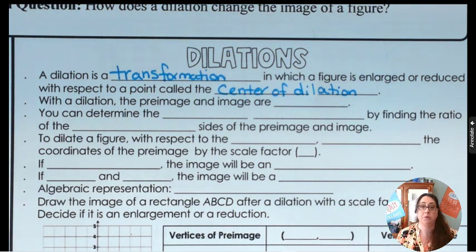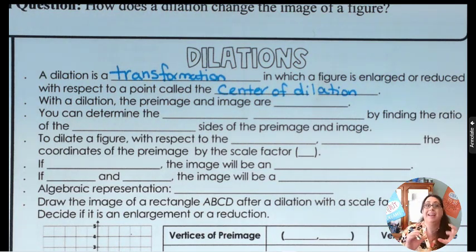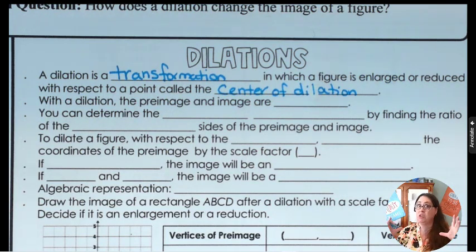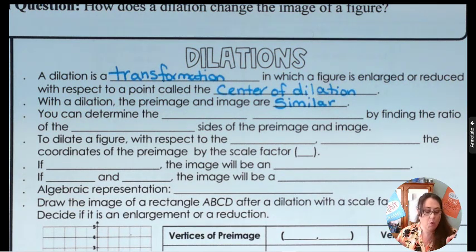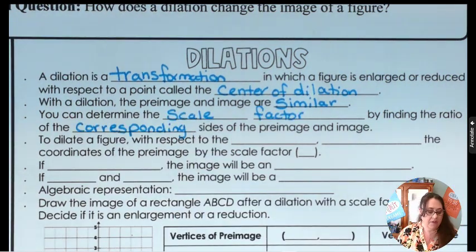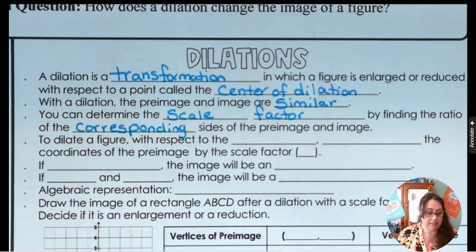We've been doing a lot of congruencies — remember congruent means the same shape and size. Dilation is similar, and similar means they are the same shape but the size is going to be different. You can determine the scale factor by finding the ratio of the corresponding sizes of the pre-image and image. To dilate a figure with respect to the origin, you multiply the coordinates of the pre-image by the scale factor, which we call k.